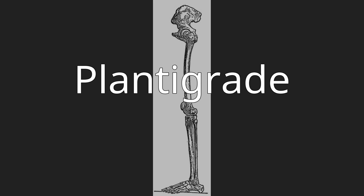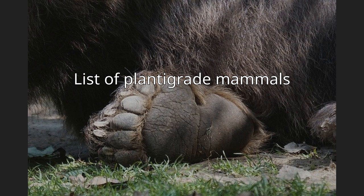List of plantigrade mammals: plantigrade mammal species include but are not limited to some primates including humans, Carnivora — Aloridae, red pandas, Musteloidea, skunks, raccoons, weasels, badgers, bears — rodents such as mice, rats, and porcupines, lagomorphs including rabbits, hedgehogs, hyraxes, and Marsupialia including kangaroos and opossums.